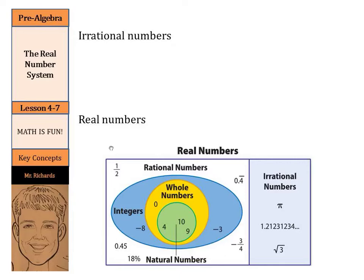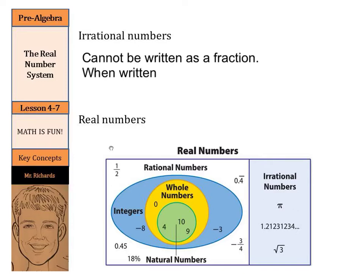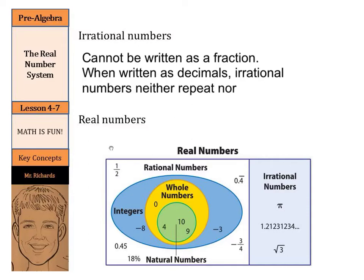Now we've learned about rational numbers, with rational numbers being able to be written as fractions. So what does that make irrational numbers? Well, an irrational number is a number that cannot be written as a fraction. Additionally, when written as decimals, irrational numbers neither repeat nor terminate.